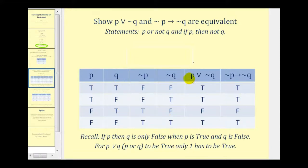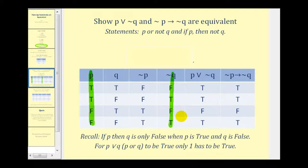Now we're going to look at the fifth column, p∨¬q. Remember, for this to be true, only one of these has to be true — or it'll only be false when they're both false. We're analyzing the first column, p, and the fourth column, ¬q. True and false is true; true and true is true; false and false is false — the only time this statement is false; and false and true is true.